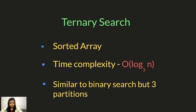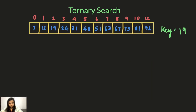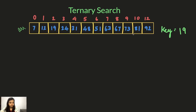I'll explain ternary search with the help of an example. Here we have an array — let's name it arr. These are the indices of the array, and the elements are sorted in ascending order. The key that we want to find is 19.